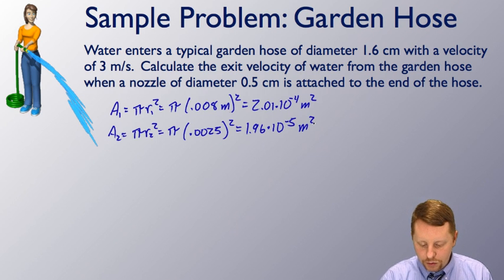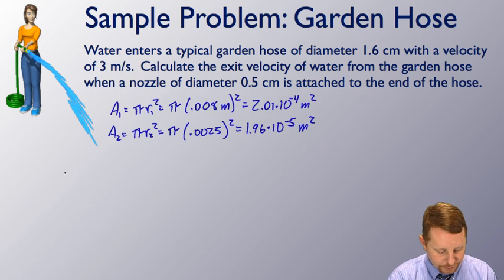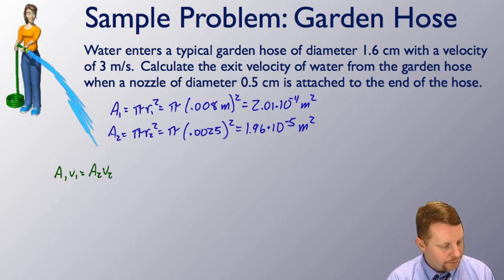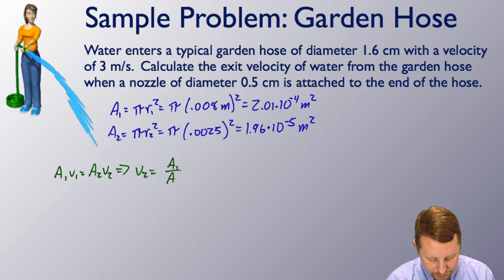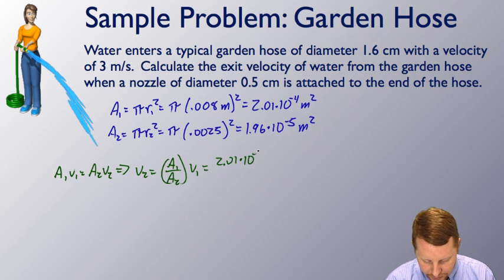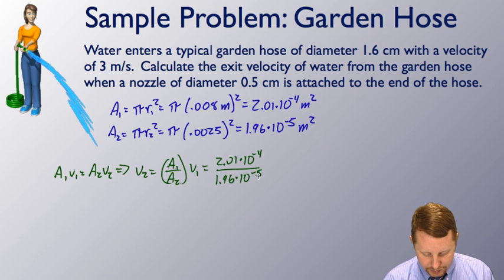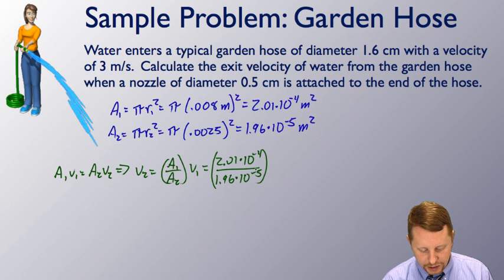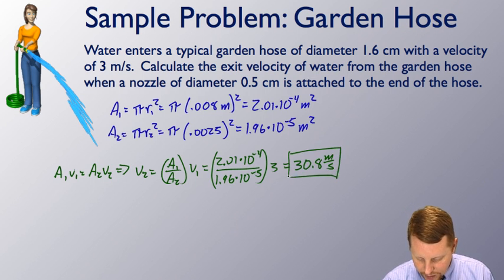Now we can apply our continuity equation for fluids and say that A1v1 equals A2v2. Again solving for v2, v2 must equal A1 over A2 times v1, or 2.01 times 10 to the minus 4 over 1.96 times 10 to the minus 5, all times our velocity 1 which was 3 meters per second, for a new velocity of 30.8 meters per second coming out the end of the pipe.